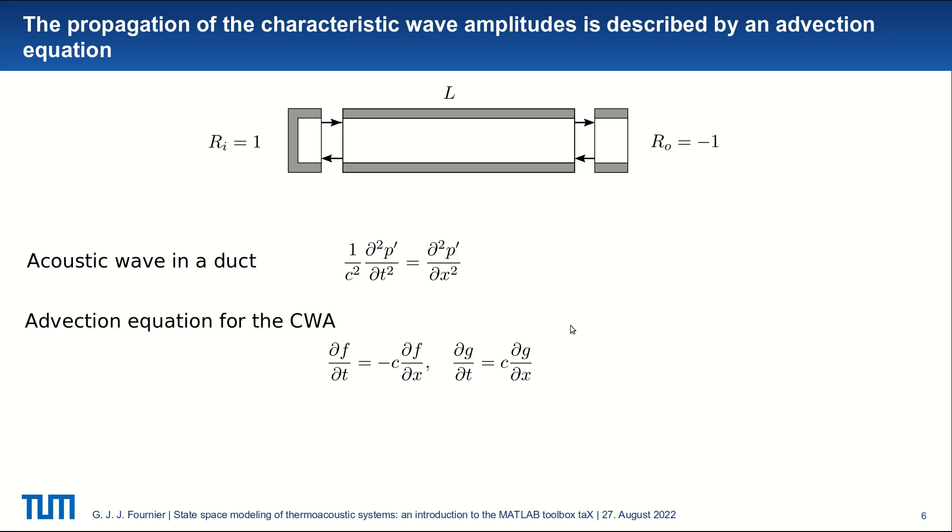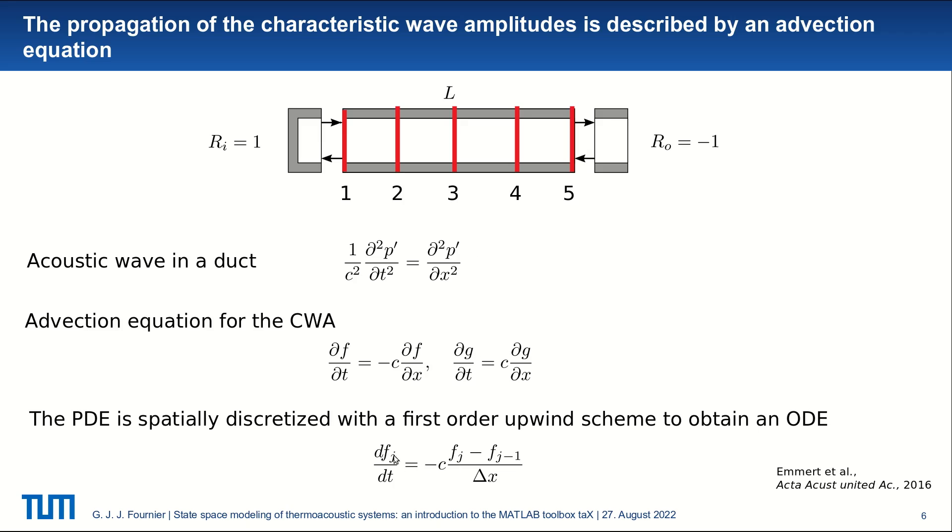Now in TAX, what has been done is that we transform this PDE using finite difference. And the duct is partially discretized with, for example, the first order upwind scheme to obtain an ODE. So we take our duct and for the sake of simplicity, we discretize it with five points, for example. And the first order upwind gives us that df over dt is minus c, f at point j minus f at point j minus 1 over delta x, delta x being the spatial discretization.